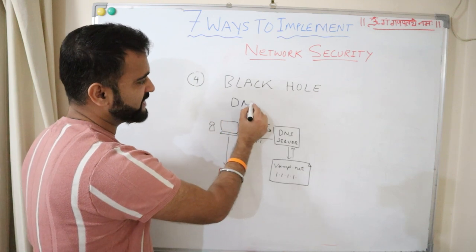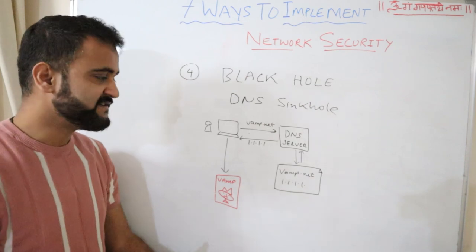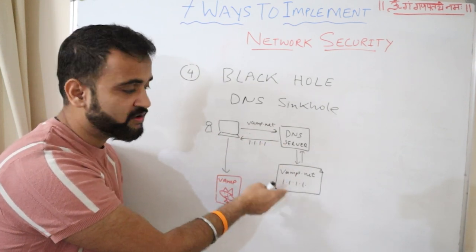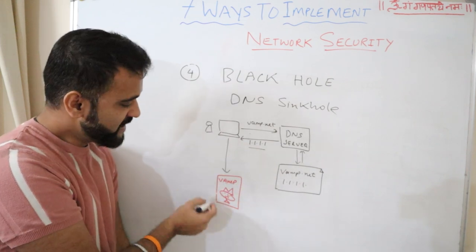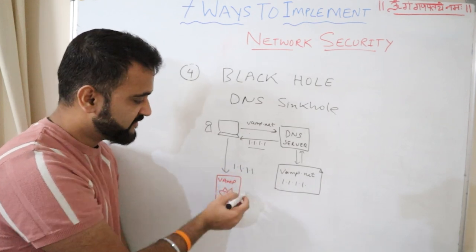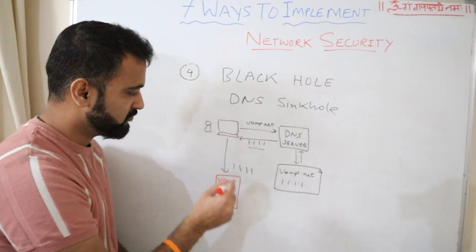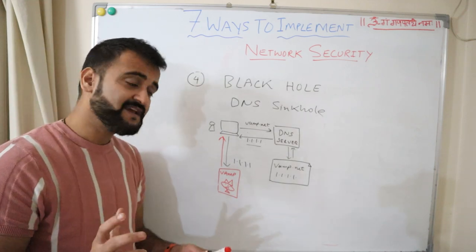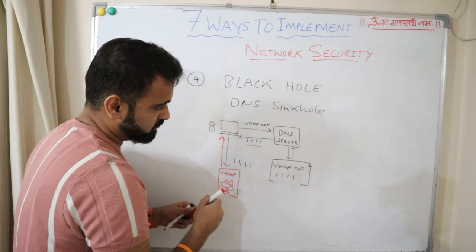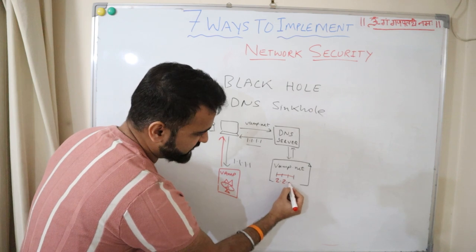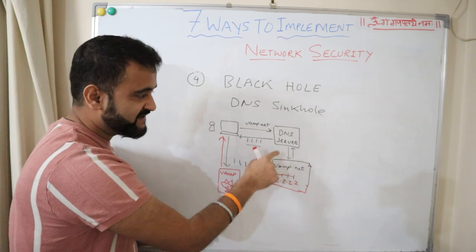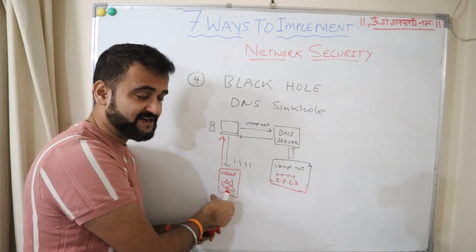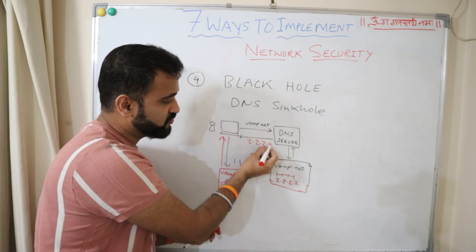A variation of black hole is the DNS sinkhole technique. In a normal scenario, suppose there is a malicious website like vamp.net — you visit it, the DNS server retrieves the DNS record and sends back the IP address, and you connect to that malicious site, creating risk. In DNS sinkhole, instead of returning that real IP address, the DNS server intentionally routes the request to another IP address — for example, 2.2.2.2 — because it recognizes the malicious activity.